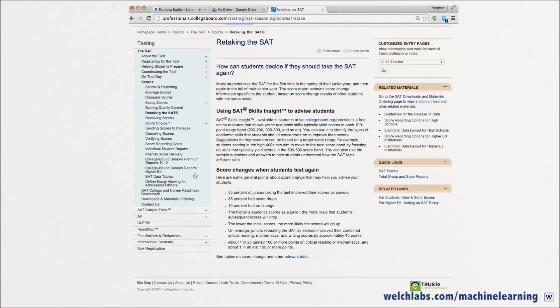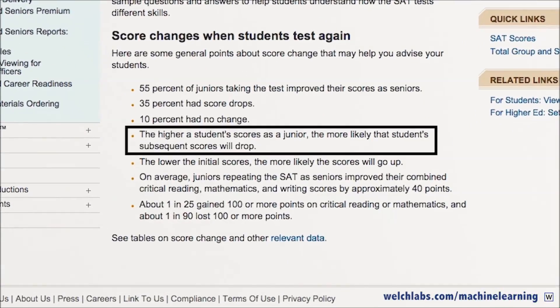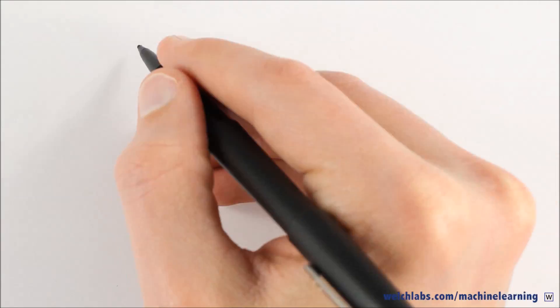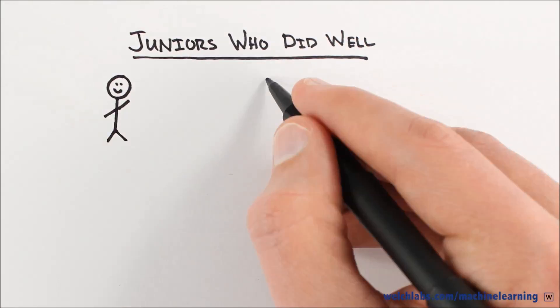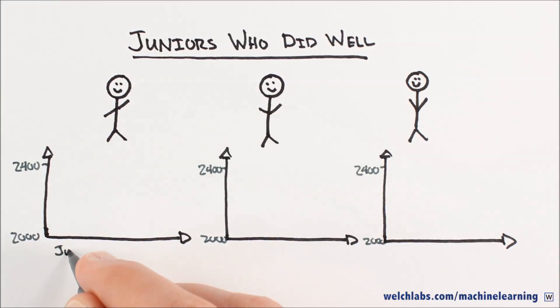An interesting example of this shows up when comparing the SAT scores of students who take the SAT both junior and senior year. Right on the College Board's website it says, the higher a student's scores as a junior, the more likely that student's subsequent scores will drop. Why would this be? It seems like students who did well junior year would also do well senior year. We can make sense of this by considering that SAT scores are composed of a signal and a noise component.